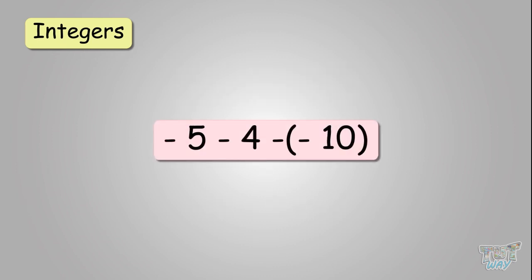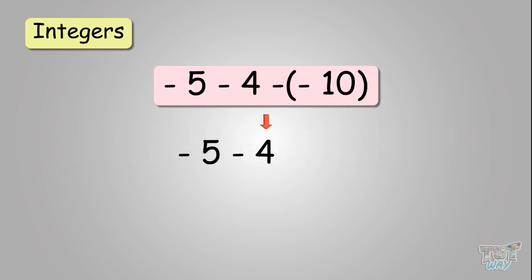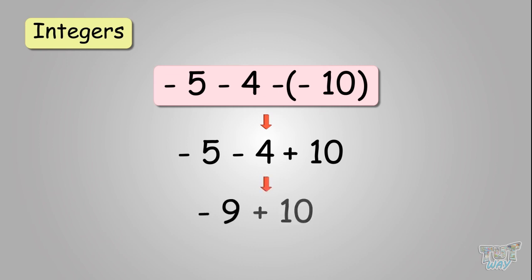Next: minus five minus four minus negative ten. First, open the brackets — a negative sign and a negative sign becomes a positive sign. So it becomes negative five minus four plus ten. Negative five and negative four have like signs, so add them to get negative nine. Then negative nine plus ten — different signs, so subtract. The answer takes the sign of the larger number, so the answer is one.